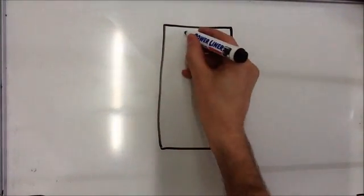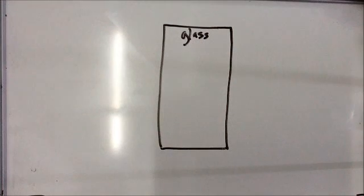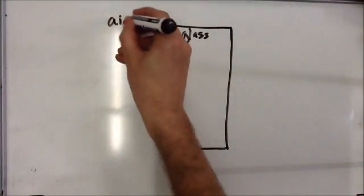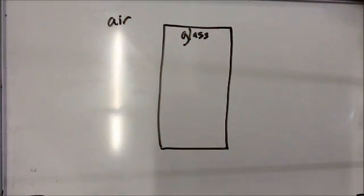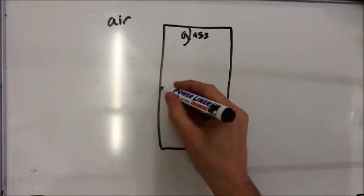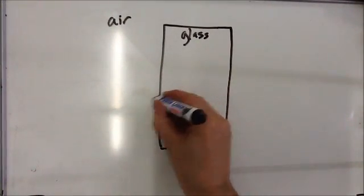The way we're going to do it is this: we're going to get a glass block and fire rays of light into that glass block. So we're going to fire them in this direction here.